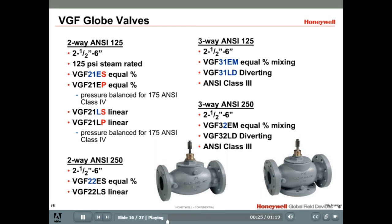The two-way models are available with either linear or equal percentage flow characteristics. The S and the P in the part number specifies if the valve is a standard model or a pressure-balanced model. The pressure-balanced models have a unique internal design that allows for higher close-off pressure and better ANSI class C leakage rating. The higher close-off capability makes these pressure balance models ideal for a central plant chiller application.